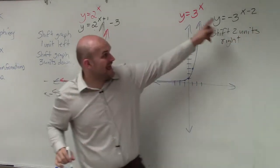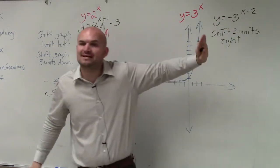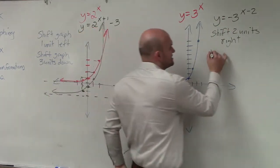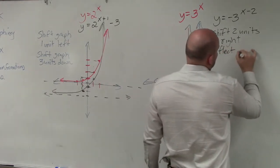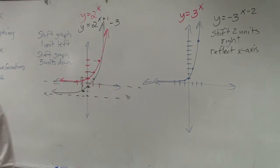Then we also know that we have a negative 1. Our a is less than 0, so we're going to reflect the graph over the x-axis. So we're shifting the graph two units to the left and reflecting over the x-axis.